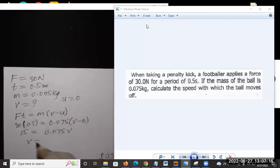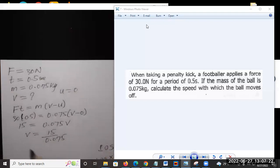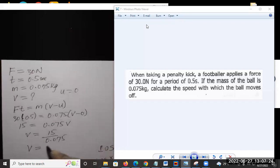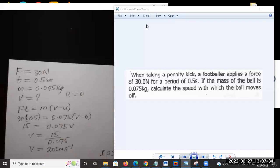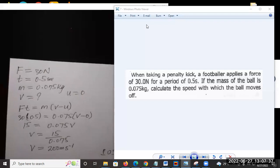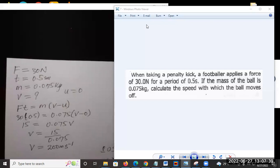Making v the subject of the formula, we have 15 divided by 0.075. That will give us the velocity of 200 meters per second. So the ball moves off with a velocity of 200 meters per second.